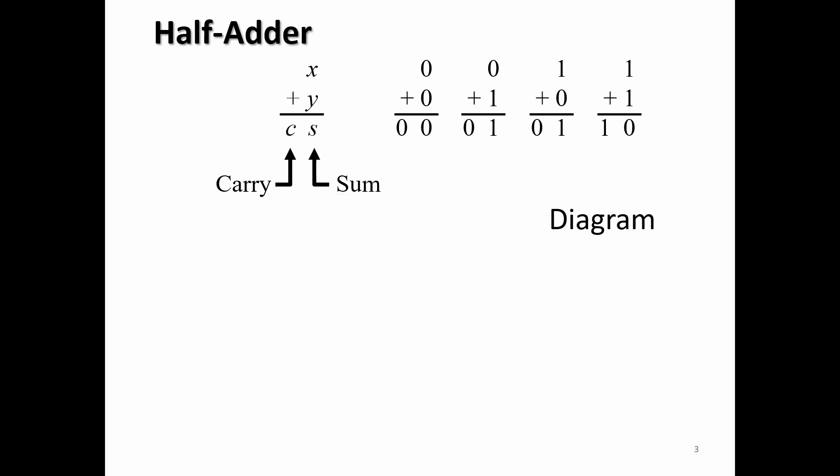So now the diagram for the half adder would be something like this. So we have x and y, that's for the carry. And we also have an XOR for the sum. And this is going to be x and this is going to be y. Now the block diagram for it usually looks like this. So we just put HA for half adder and have a carry and a sum.